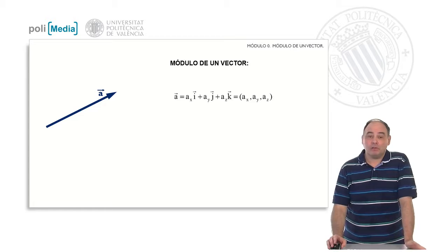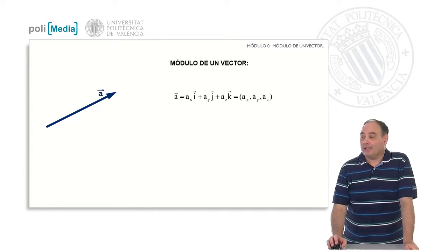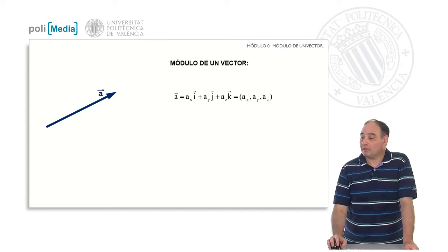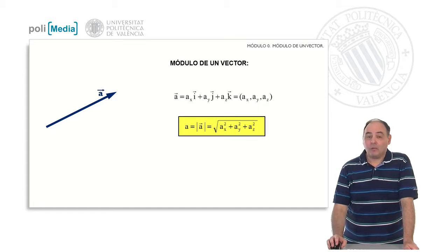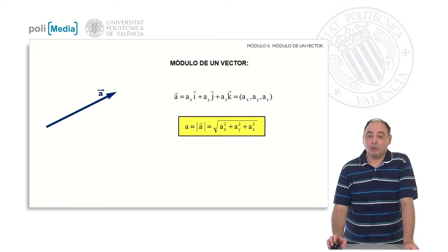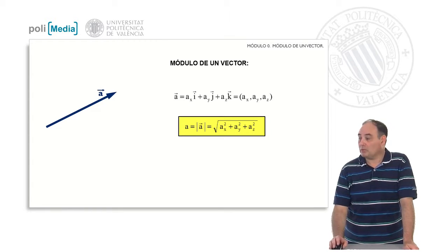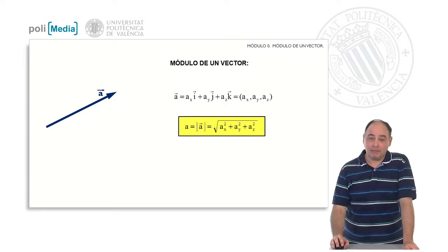With vector operations, we start with the modulus of a vector — that is basically how long it is. Given a vector from its components a_x, a_y, and a_z, in either of the two usual notations, the modulus is the square root of the sum of the squares of the components. To represent a modulus, we put either the vector with its arrow with two vertical bars on the sides, or directly the vector name without the arrow above, which also represents the modulus.